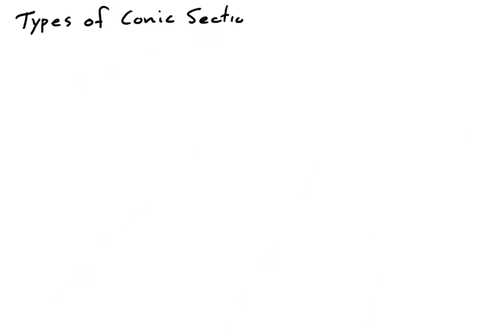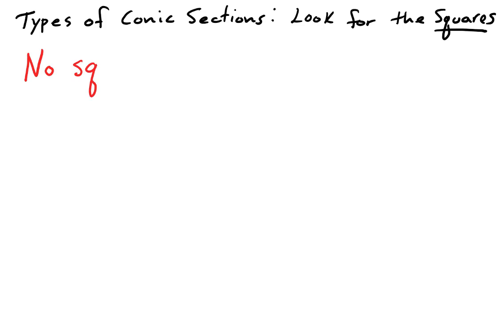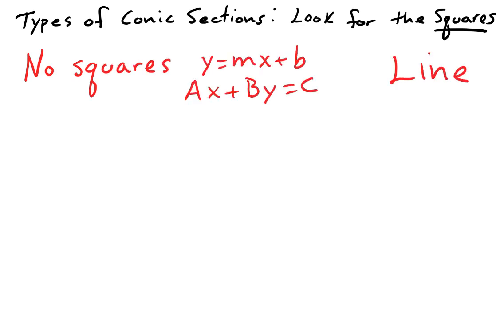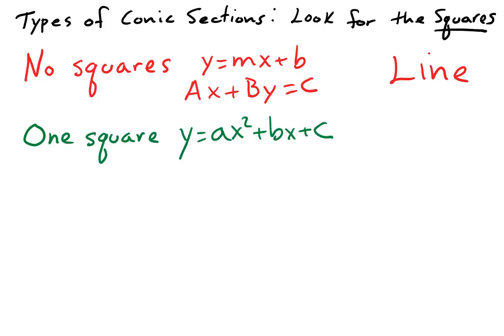Starting from an equation, to identify which type of conic section the equation represents, look for the terms that involve squares of the variables. If the equation does not have a square on either variable, the graph is a line. If the equation has a square on one variable but not the other, the graph is a parabola.